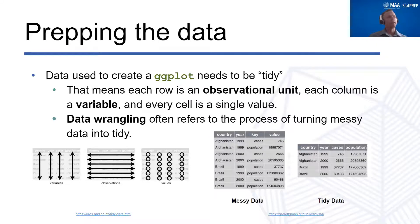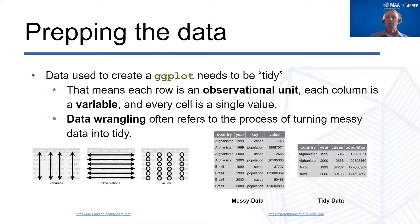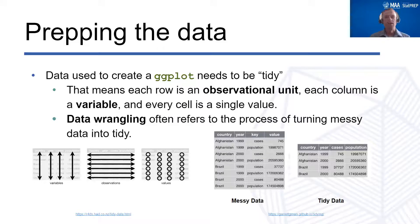I want to talk about preparing data. The data you use with ggplot needs to be tidy. That means it needs to be a data table where every row is a single observational unit, each column is a single variable, and every cell is a single value. We can't have a last column that's the sum of all rows, or a bottom row that's an average of the rest of the observations.